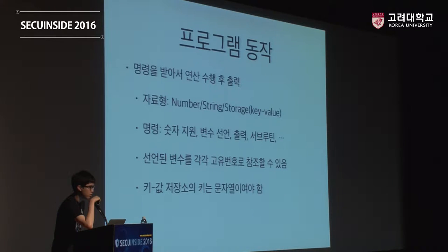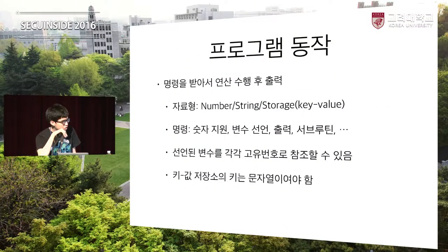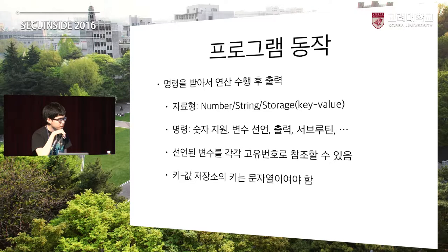자료형에는 세 가지가 있었어요. 넘버 그리고 스트링, 스토레이지. 넘버는 말 그대로 숫자고 스트링은 문자열이고, 스토레이지는 키가 스트링이고 밸류는 넘버, 스트링, 스토레이지 아무거나 될 수 있는 그런 식으로 짰었고요. 명령에는 숫자 더하기 같은 거 지원했고, 변수를 숫자나 자료형으로 선언한다던지, 함수에서 리턴을 하면 문자열로 변환해서 출력을 한다던지, 함수를 선언해서 실행한다던지 이런 식으로 할 수 있게 해줬었어요. 선언된 변수를 각각 그 레퍼런스 번호로 참조할 수 있었고, 키값 저장소에서 키는 문자열만 등록할 수 있게 해놨었어요.